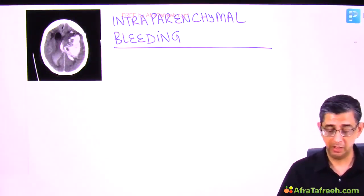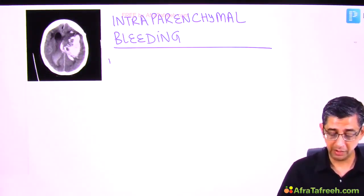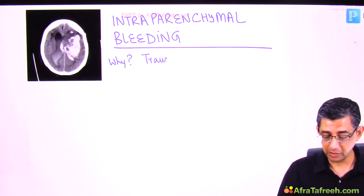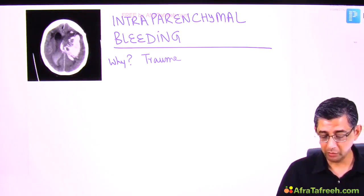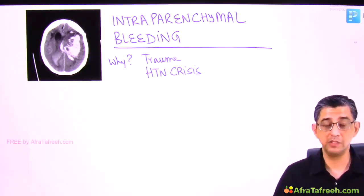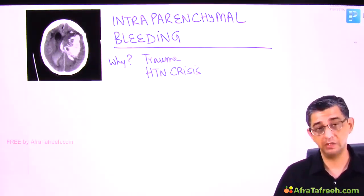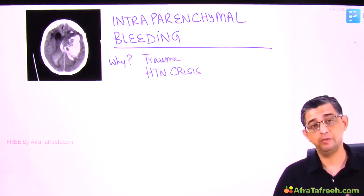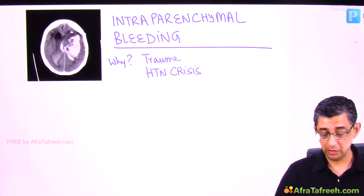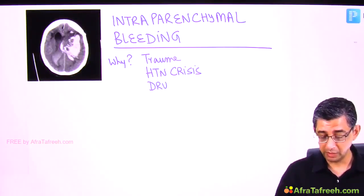Let us first study the 'why' component of intra-parenchymal hemorrhage. Apart from trauma, the most common exam scenario would be a patient in hypertensive crisis. Once the BP spirals out of control, the important blood vessel — the branches of the middle cerebral artery, specifically the lenticulostriate artery — can rupture and contribute to IPH.